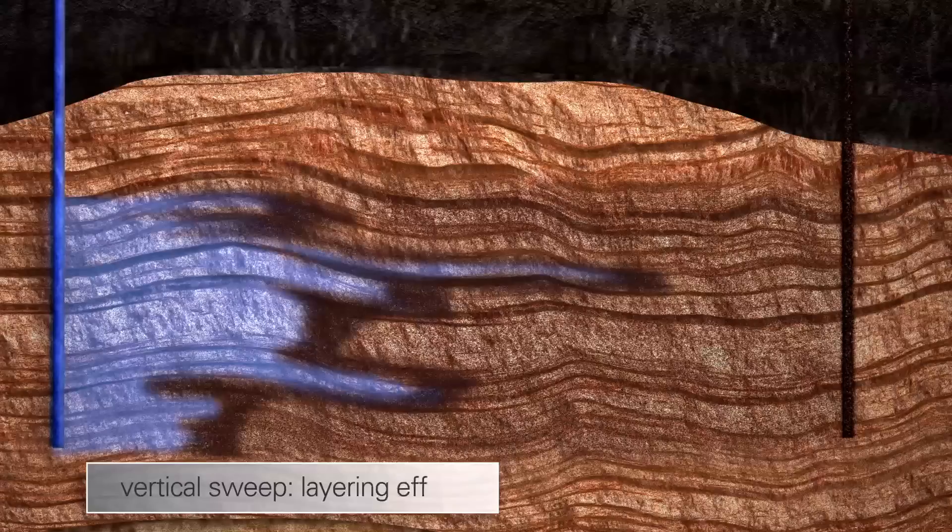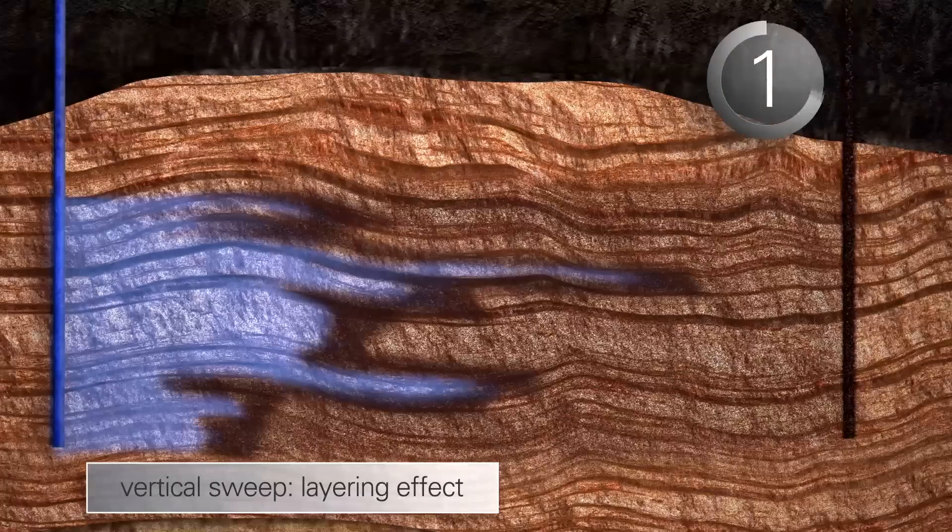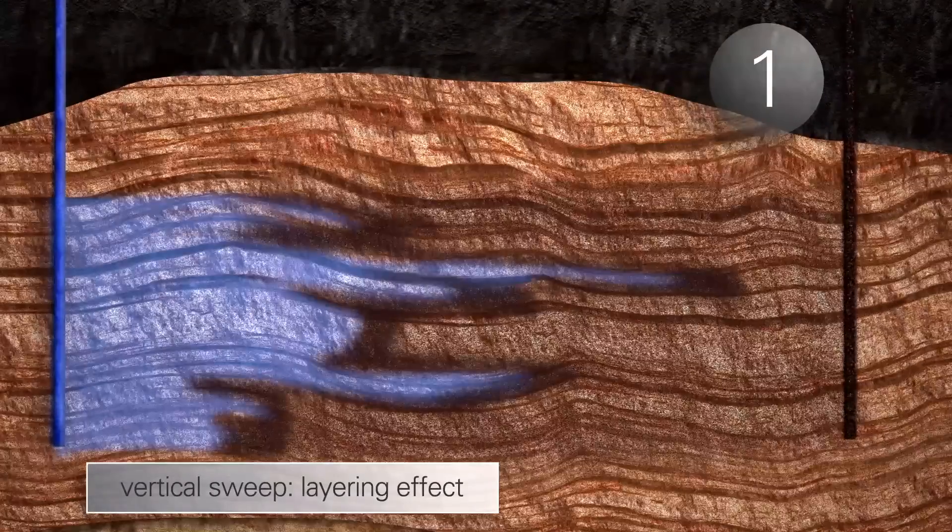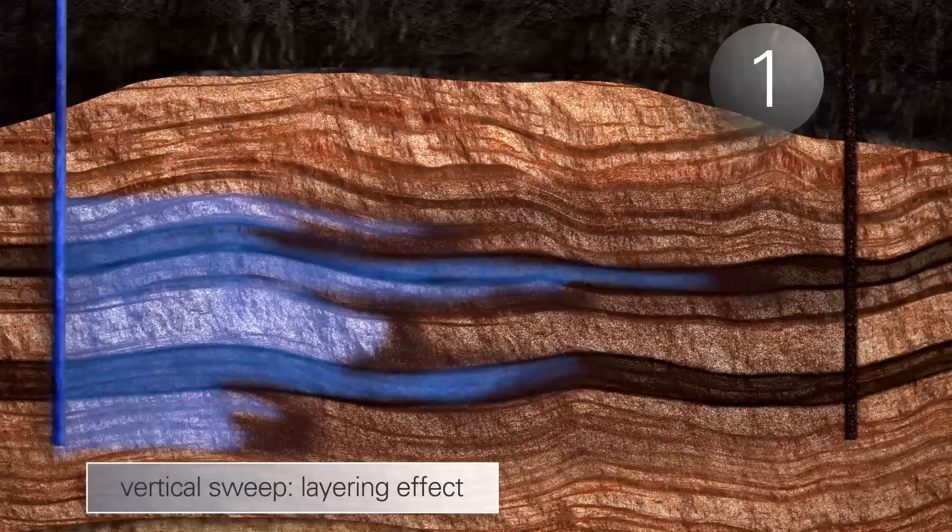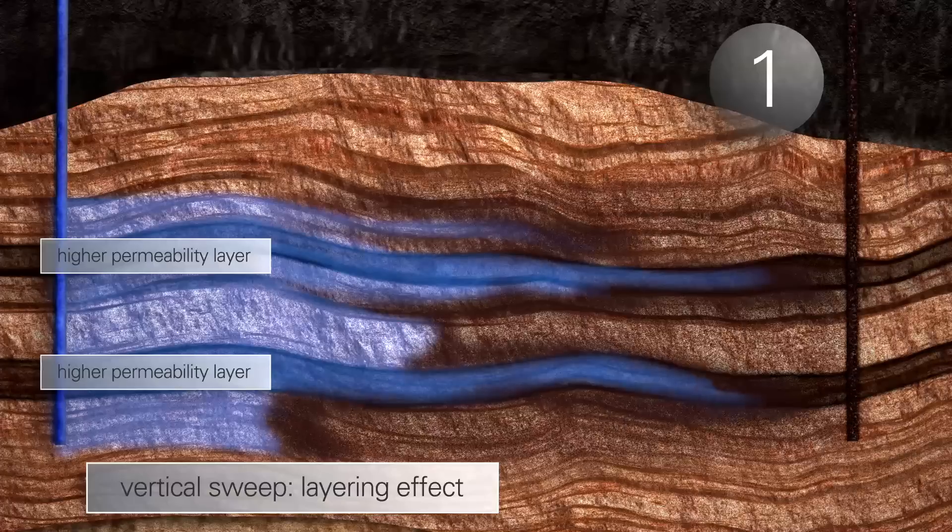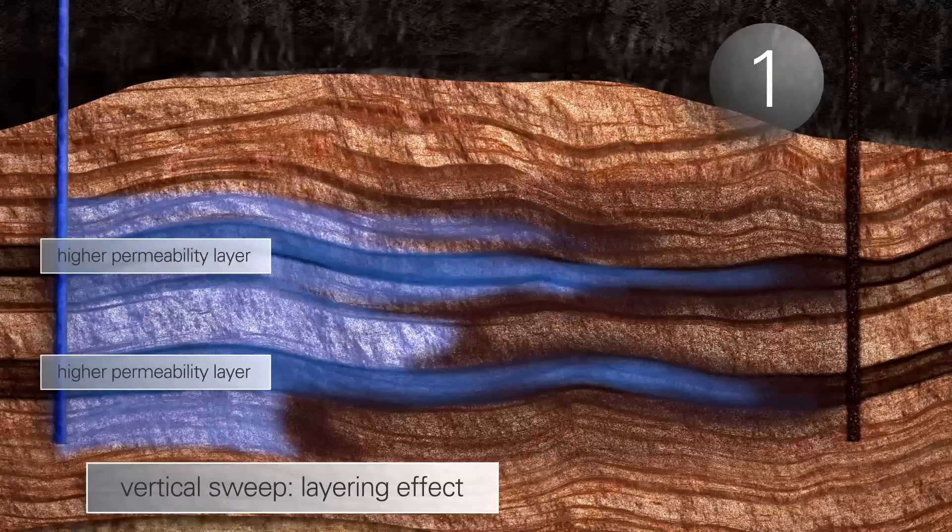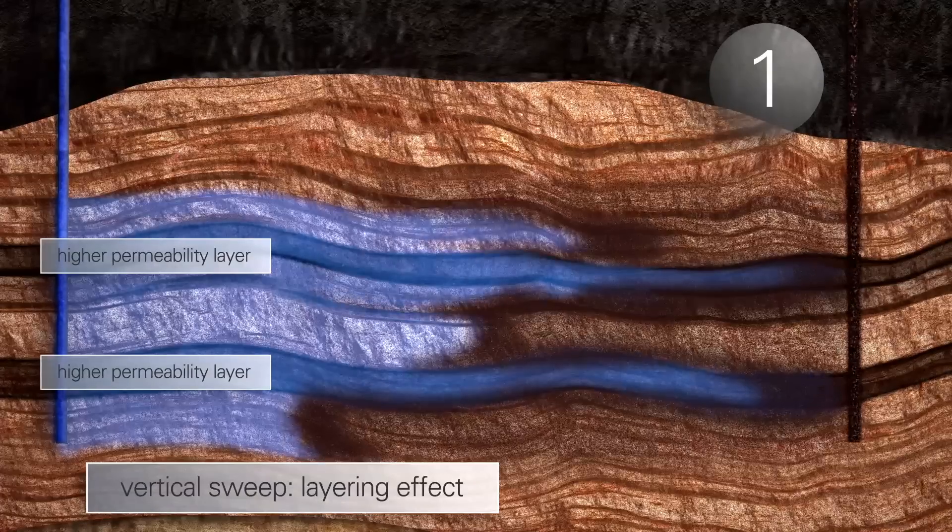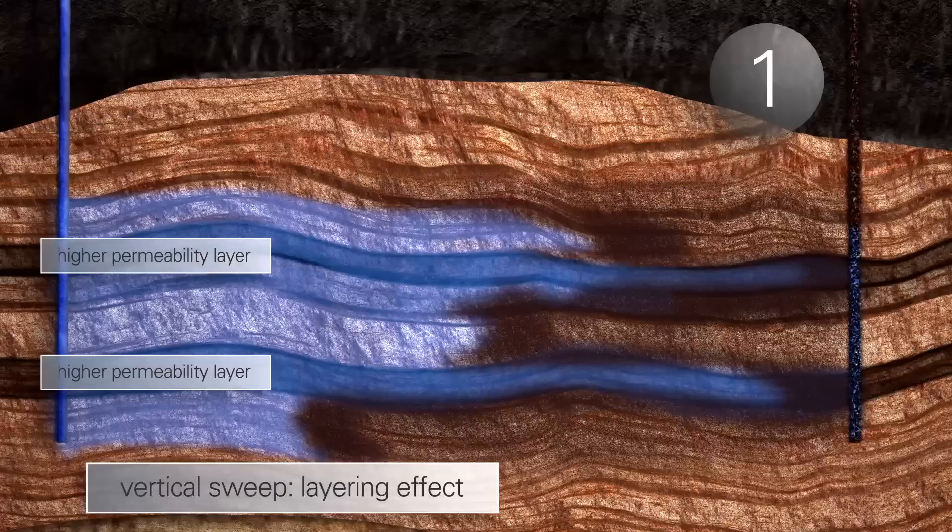First, the permeability of rock in a reservoir is not uniform, and water tends to flow through more permeable layers. It takes the path of least resistance, and much of the subsequent water injected continues to flow through the same layer which has already been swept of oil.